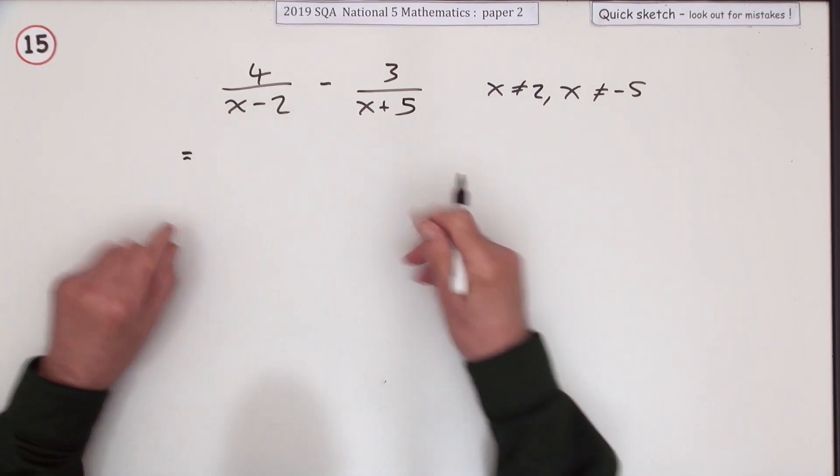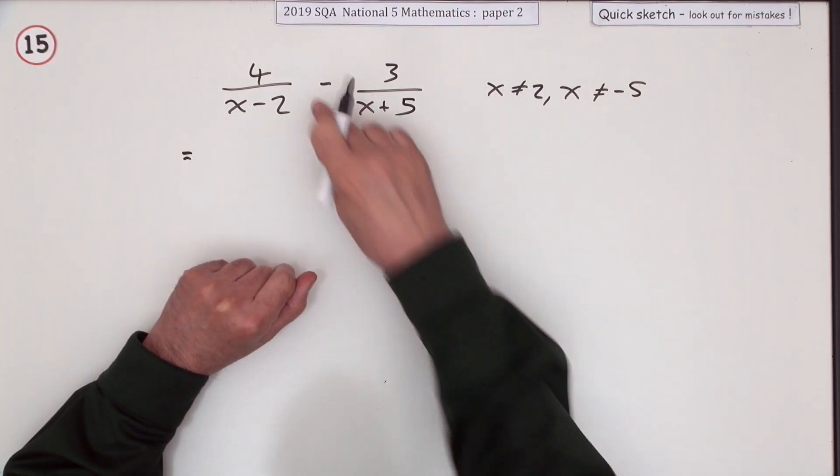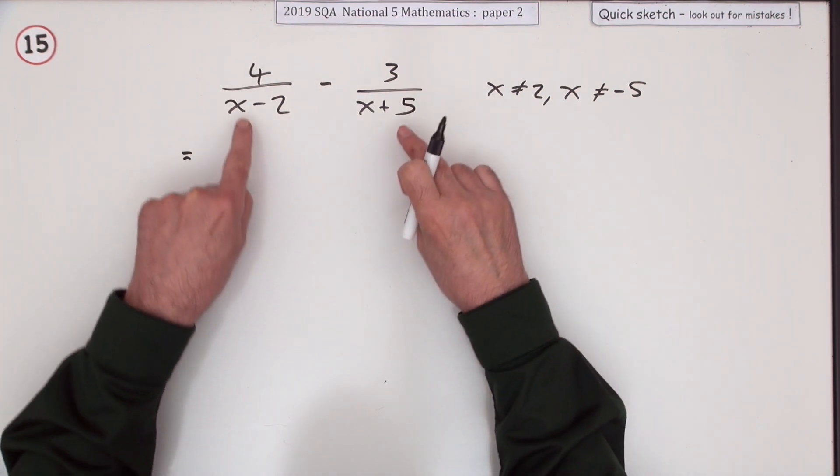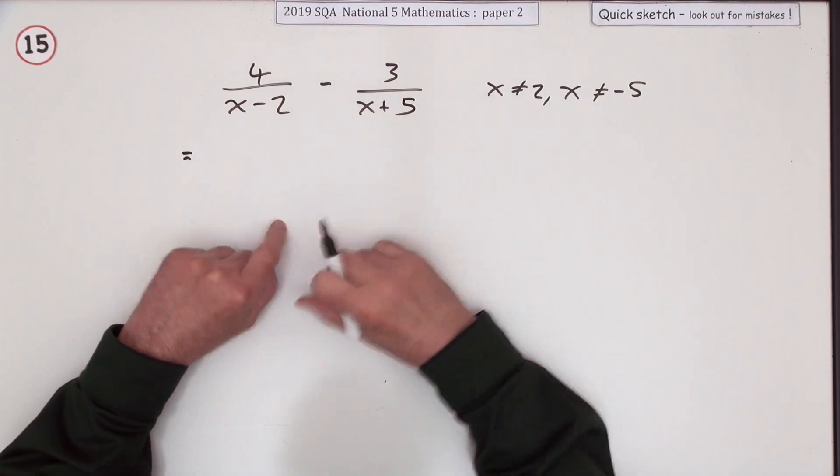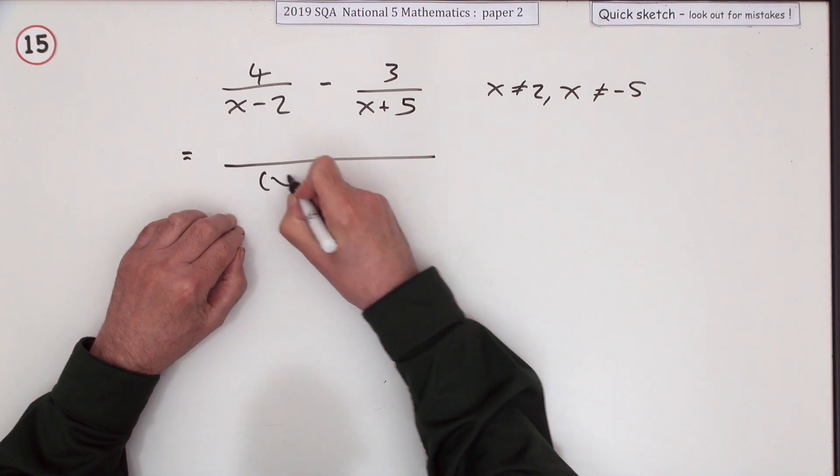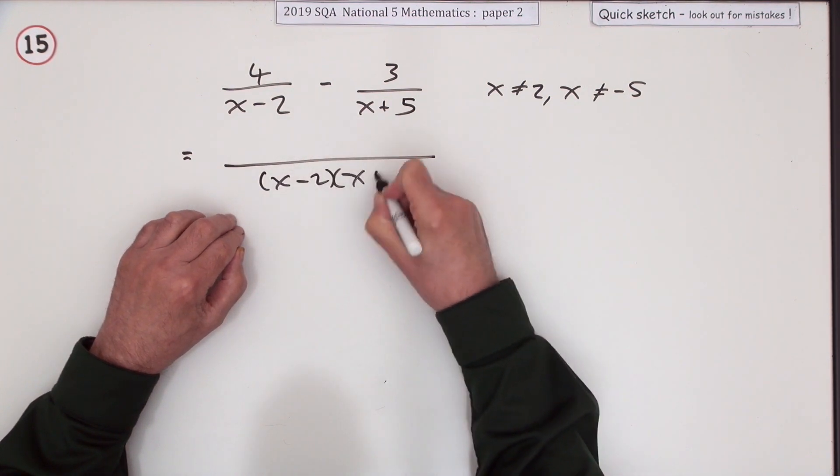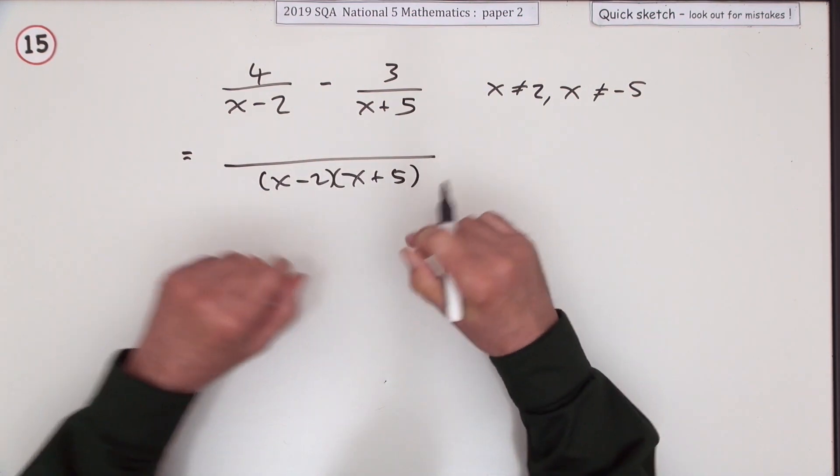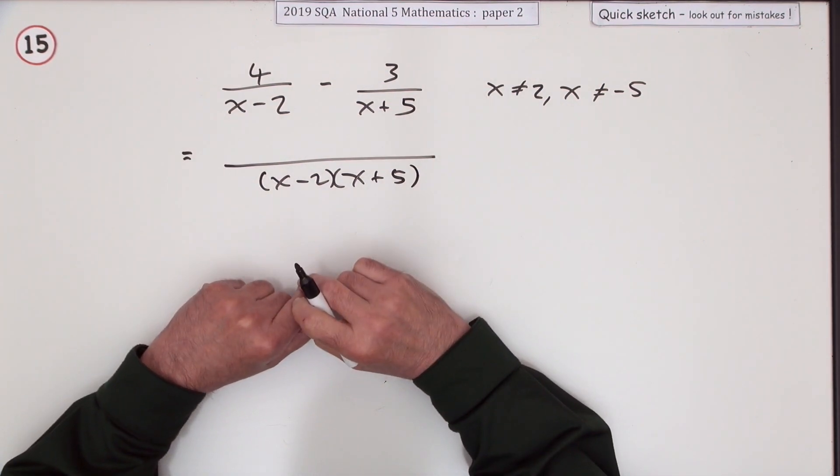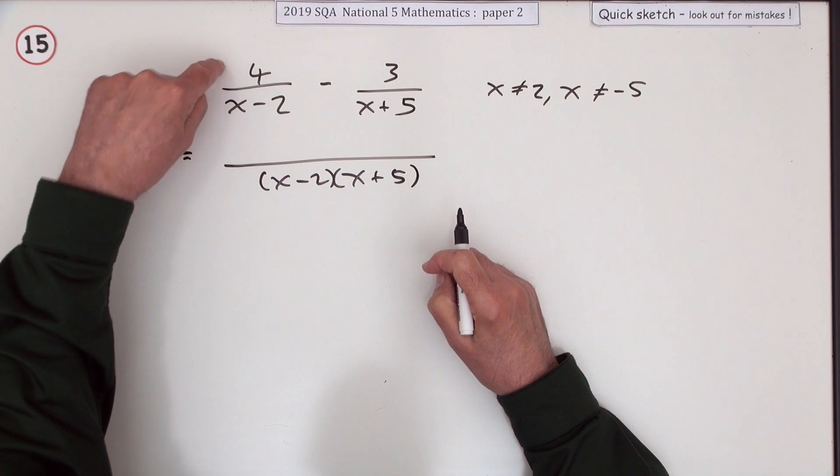If you're adding or subtracting fractions, you have to have the same denominator. So you need to find something that both of these denominators will divide into. They'll both divide into the product - that will always work. Sometimes it's more than you need, but in this case that's exactly what you want.